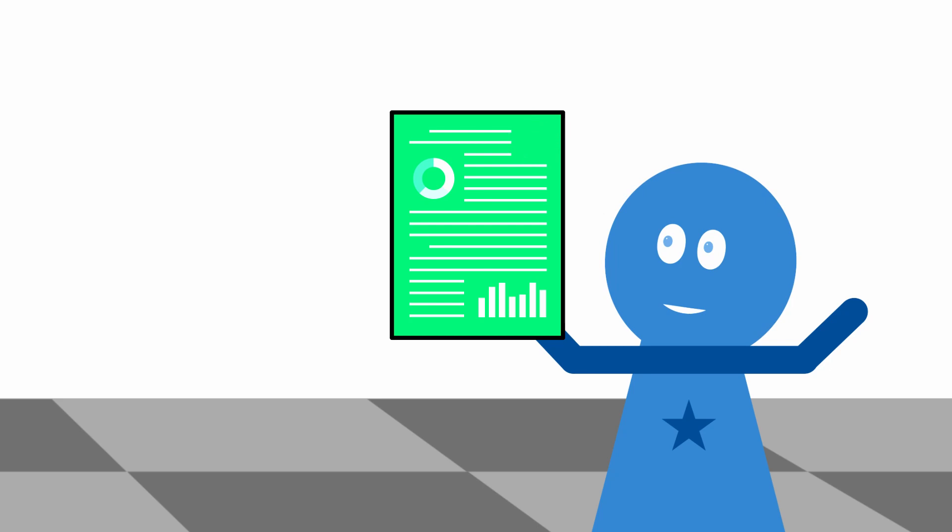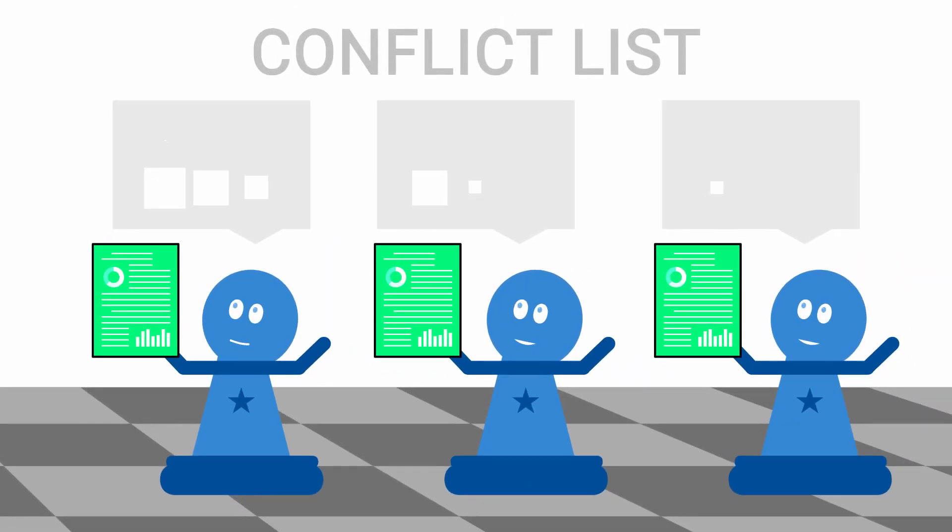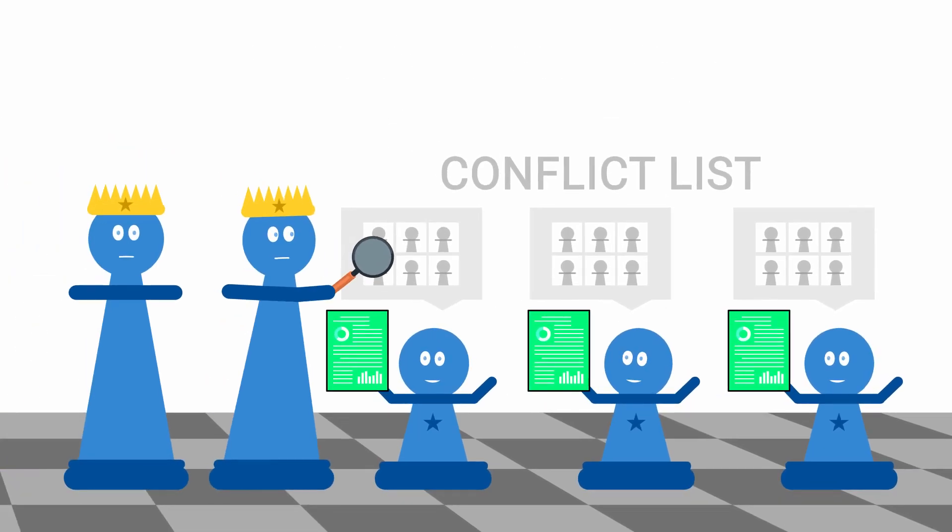The reviewers do not know the names of the authors. And to further prevent conflicts of interest, all authors and reviewers are asked to provide a list of people with whom they have a conflict. And program chairs make sure no reviewer is assigned a paper by an author they have a conflict with.